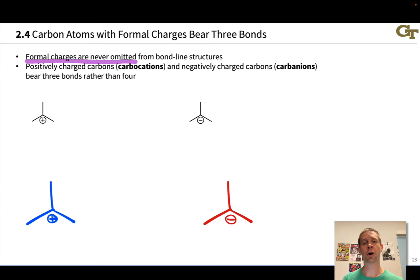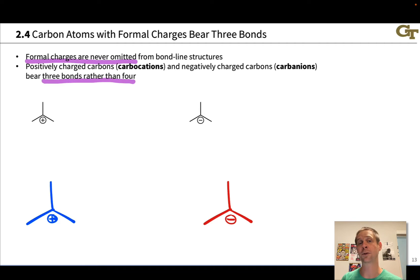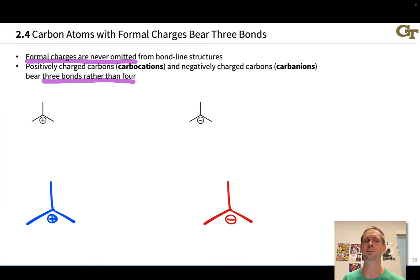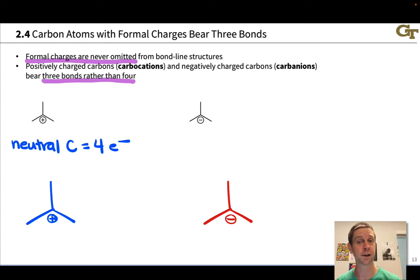On this slide, we're going to focus on positively and negatively charged carbons. Positively charged carbons are known as carbocations and negatively charged carbons as carbanions, for fairly obvious reasons. One interesting observation about these species is that they bear three bonds rather than four, and we can do a formal charge analysis to see this. Let's start with the carbocation.